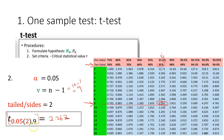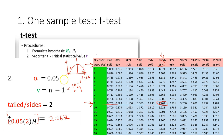Remember, this is a two-sided test, so the critical t only gives you the absolute value. Imagine a curve: the threshold is set at both tails. The positive side is +2.262 and the negative side is -2.262.